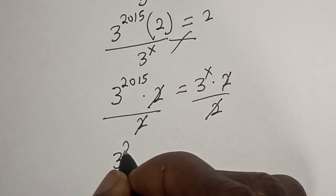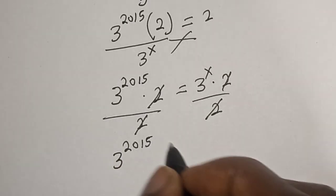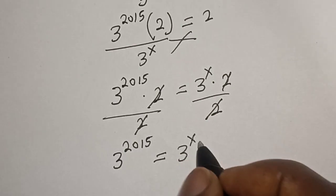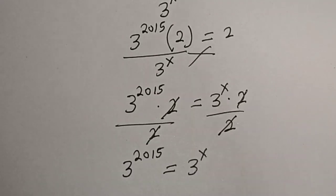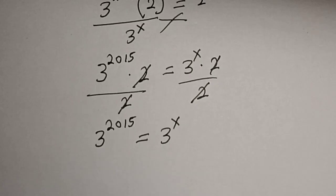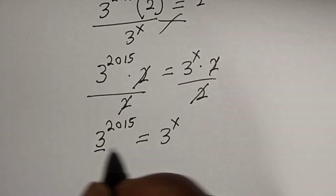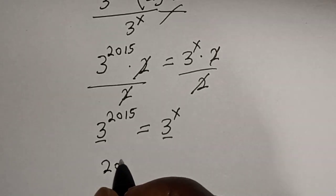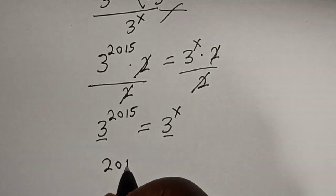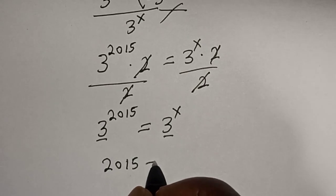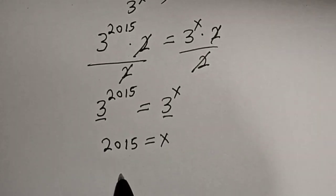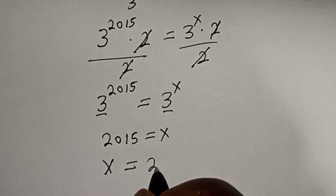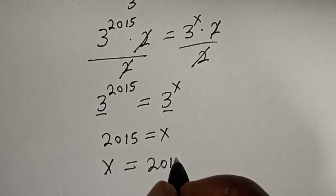We have 3 raised to power 2015 is equal to 3 raised to power s. Then we have the same base theory, therefore 2015 is equal to s, and our final answer is s is equal to 2015.